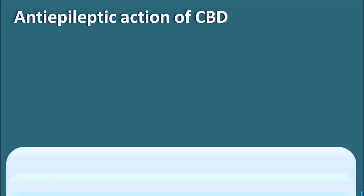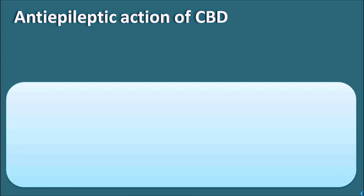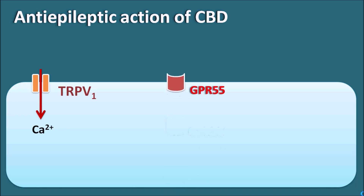Now let us see the anti-epileptic action of CBD. Cannabidiol blocks the CB1 receptor, thereby showing anxiolytic as well as analgesic activity. But its anti-epileptic activity is not attributed to the action on CB1 receptors; instead cannabidiol acts on other targets to show anti-epileptic activity. Epilepsy is a neuronal disorder in which high-frequency neuronal discharge leads to epilepsy. One such target is the TRPV1 channels through which calcium can enter neuronal cells, and another is the GPR55 receptor which can increase intracellular calcium release.